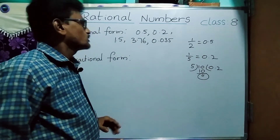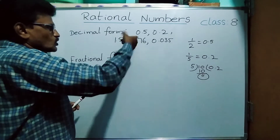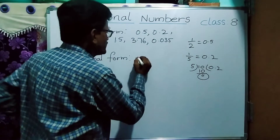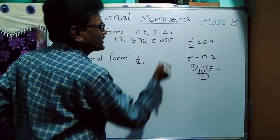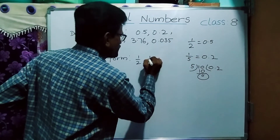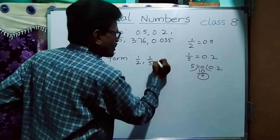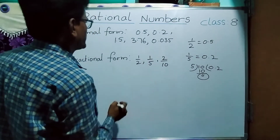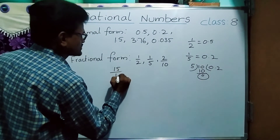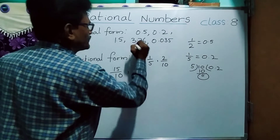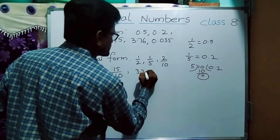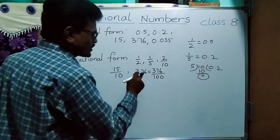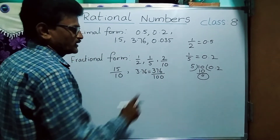We can also represent numbers in fractional form. 0.5 is 1 by 2; 0.2 is 1 by 5, which can also be written as 2 by 10. 1.5 is written as 15 by 10. 3.76 is equal to 376 by 100. So this is decimal form and this is fractional form.